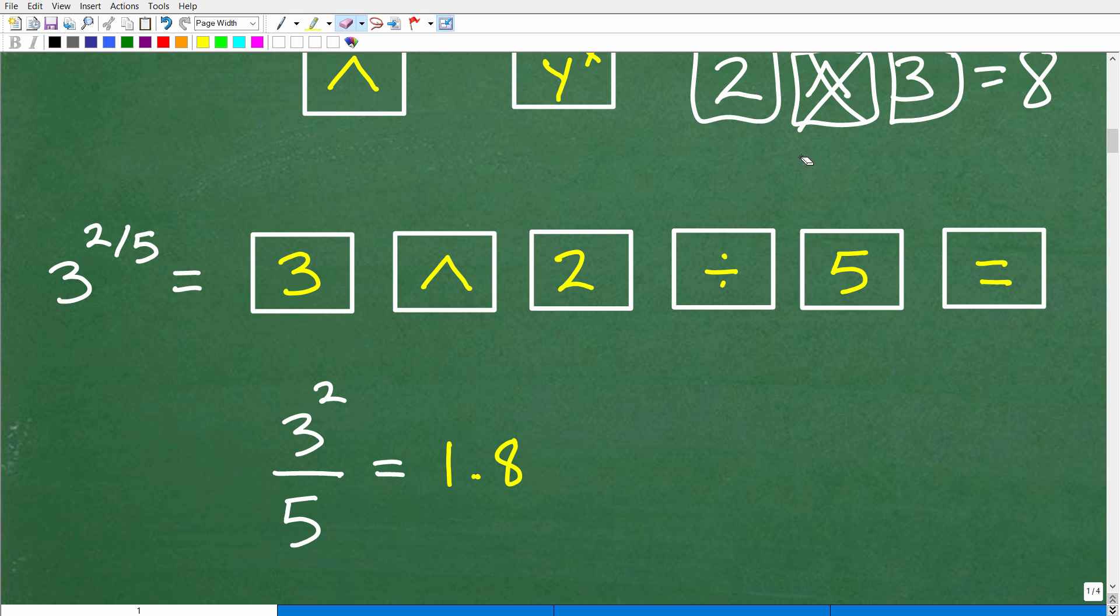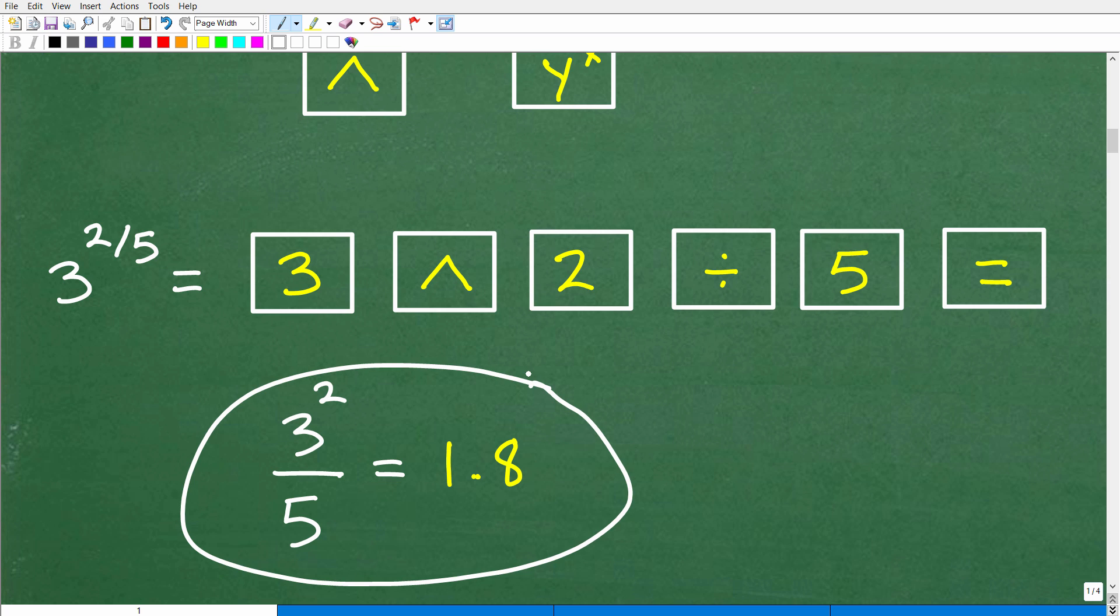Let's talk about plugging in 3 to the 2 fifths power. Let me show you the buttons here. What we would do is go 3, right? Then based on what I told you, 3 and we're doing powers, so we'll put the caret key. Then 2 fifths is going to be 2 divided by 5. So 3 caret 2 divided by 5. We hit the equal sign. And what comes out? 1.8.